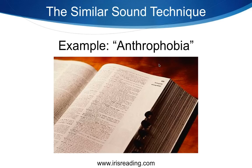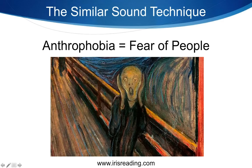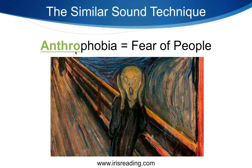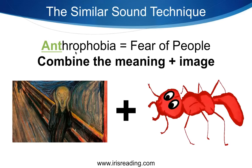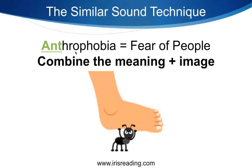Apply the same process to anthrophobia — the fear of people. You might get the meaning from the prefix 'anthro,' like anthropology. Or use the similar sound 'ant' — the insect. Combine ant and fear of people: imagine a bunch of ants running as footsteps crash down on them. They're afraid of people stepping on them. We're combining the meaning with an image derived from a similar sound, because we remember things visually.